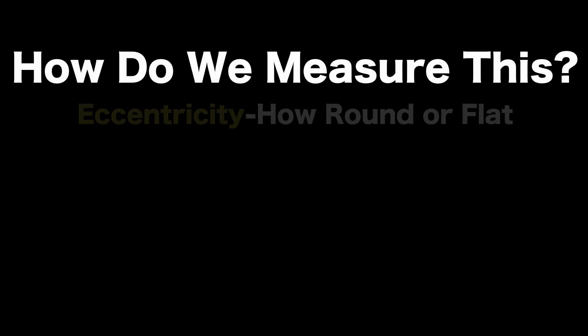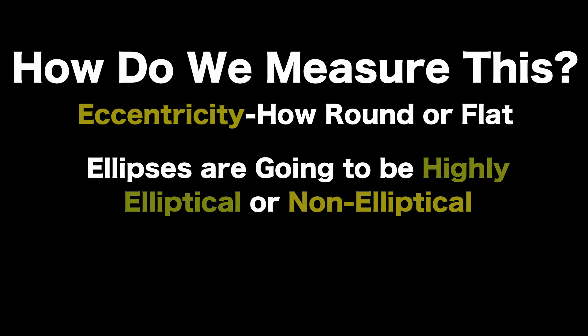So how do we measure this? We measure it through a process called eccentricity. That's a measure of how round or how flat an orbit is. And we basically tend to say that objects are either going to be highly elliptical or non-elliptical. Your non-elliptical are going to be round. Your highly elliptical are going to be very flattened.